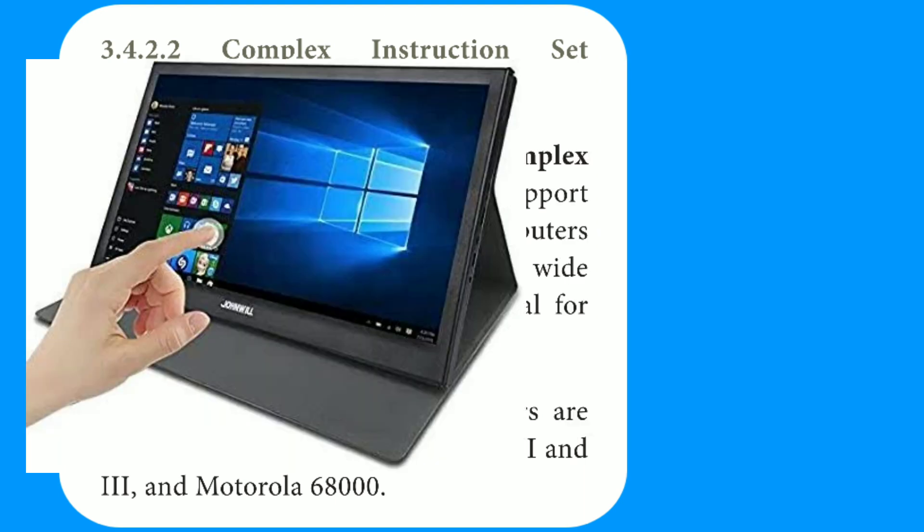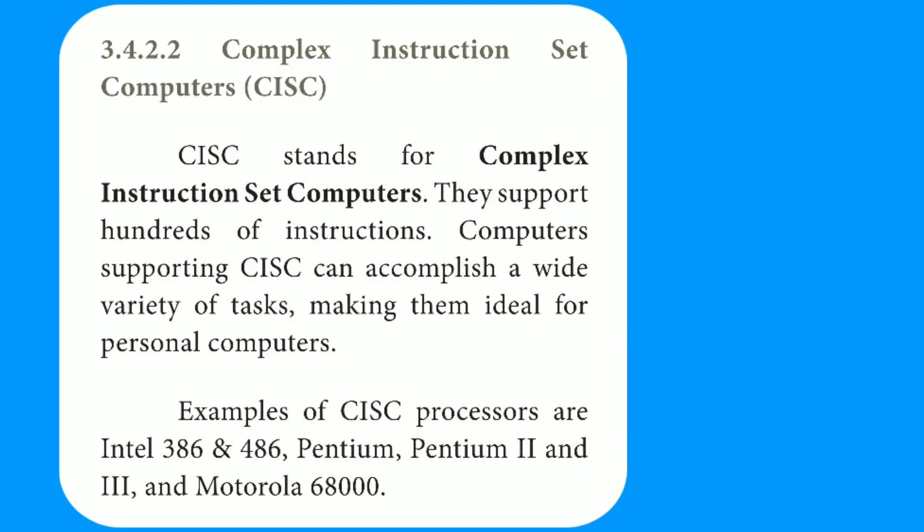CISC uses a processor with complex instructions, and there is dedicated hardware to execute them. Examples of CISC processors are Intel 386 and 486, Pentium 2 and Pentium 3, and Motorola 68000.